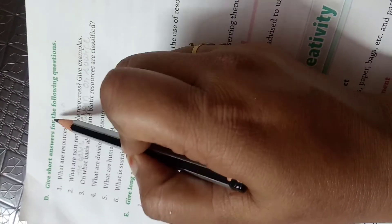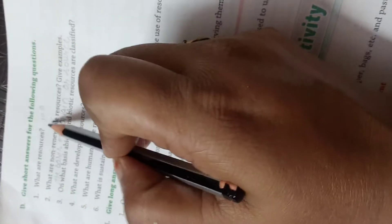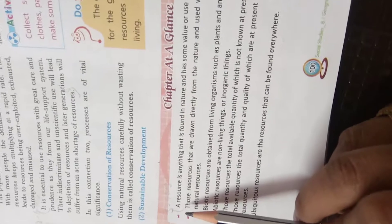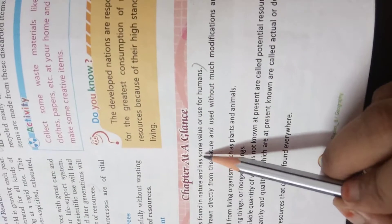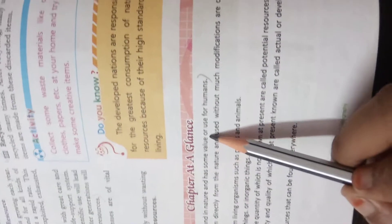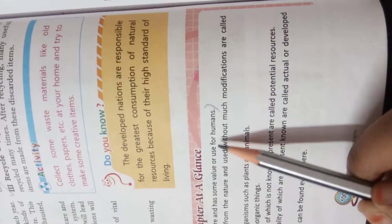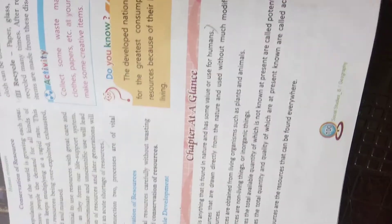Part D: Give short answers for the following questions. First question: what are resources? The answer is on page number 100. A resource is anything that is found in nature and has some value or use for humans.